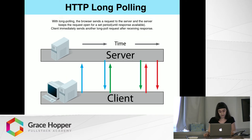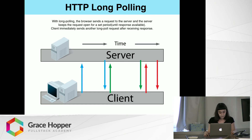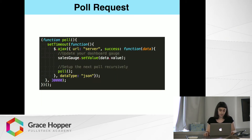With long polling, it is a variation of polling designed to accommodate scenarios where the server does not have new data available. You make an HTTP request to the server, and the server keeps the request open for a set period. Instead of sending an empty response back, the server waits until the information for the client becomes available. If the requested information is not available within a specified time interval, the server sends an empty response to the client, closes and reestablishes the connection. This is a poll request function — it uses a set timeout with an interval set at 30 seconds, and it makes an AJAX request to the server, continuously polling the server for data.